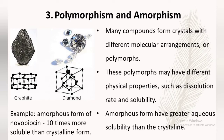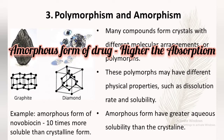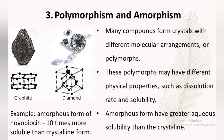Amorphous forms have greater aqueous solubility than the crystalline form, because the energy required for moving a molecule from crystalline form into solution is more compared to that from the amorphous form. For example, the amorphous form of novobiocin is 10 times more soluble than its crystalline form. Novobiocin is an antibiotic derived from the fungus Streptomyces niveus and is effective against actinobacteria.